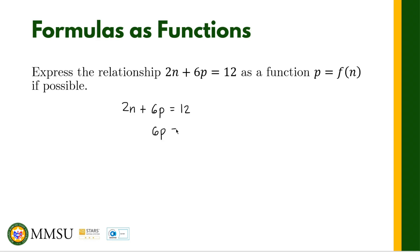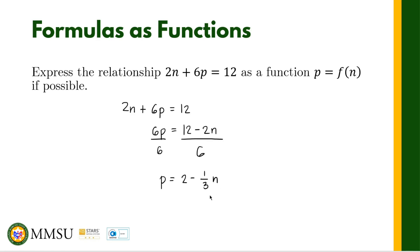We transpose 2n to the other side, so this becomes 12 minus 2n. Then we divide both sides by 6 to solve for p. So we have p is equal to 12 over 6, which is 2, minus 2 over 6, which is one-third n. Now we can define the function: p equals f of n equals 2 minus one-third n.